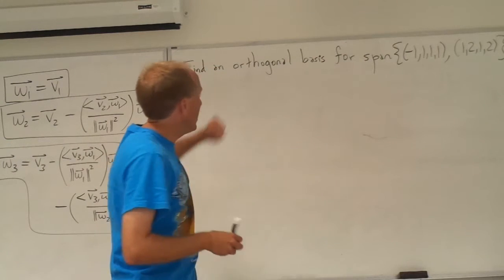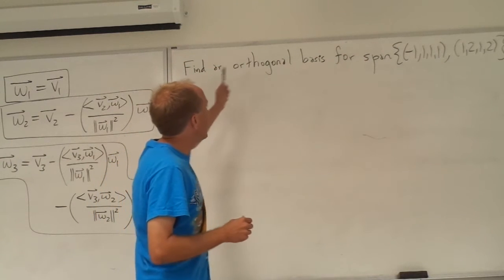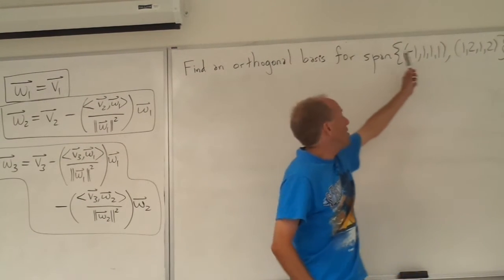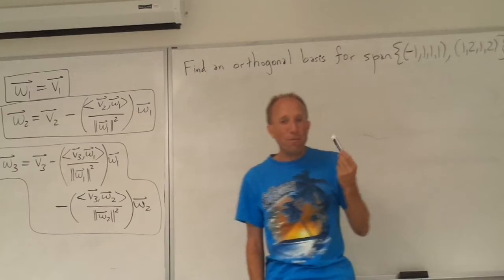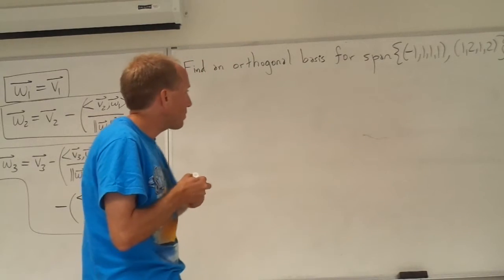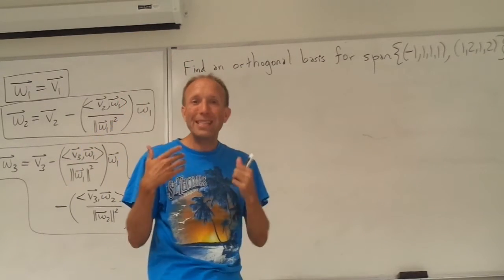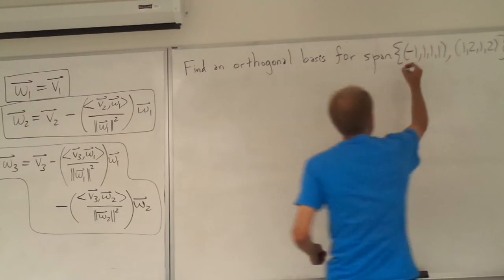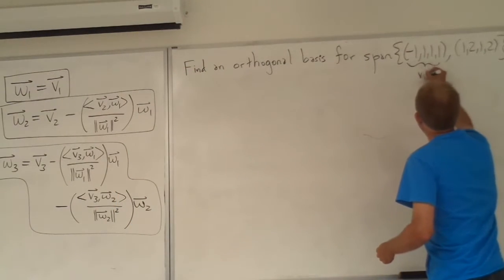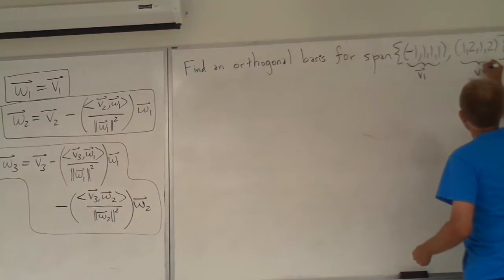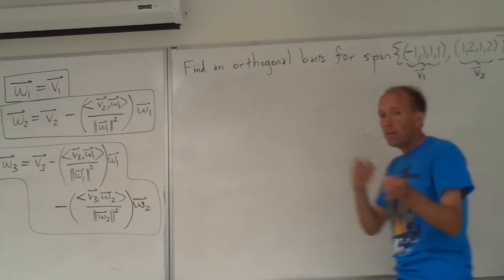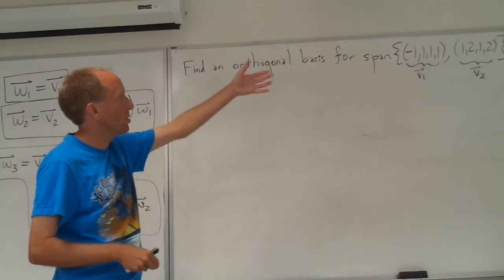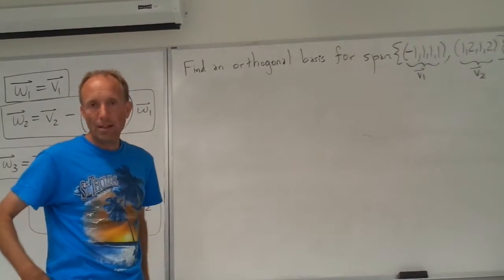The first one is right here: find an orthogonal basis for the span of these two vectors in R4. We can assume that we are using the standard inner product on this vector space, and I am going to call this vector v1 and the second one v2. You can do it in either order — it doesn't matter which vector is first and which one is second.